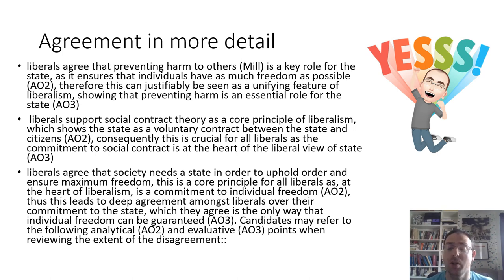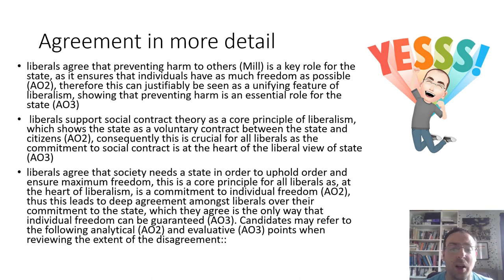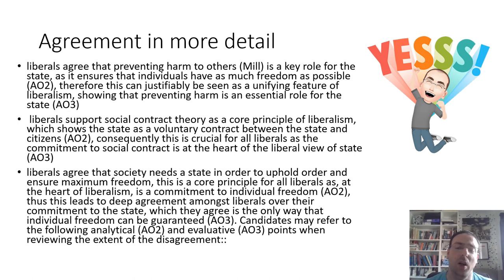Fundamentally, they agree the state must exist and uphold law and order, because in chaos and anarchy you don't have freedom. To have individual freedom you have to have a state to maintain it. Both modern and classical liberals absolutely agree the state should do nothing to impinge or stop individual freedom. These key points show there is something inherently central in liberal thinking when it comes to the state. However, of course, there are also lots of areas in which they disagree.